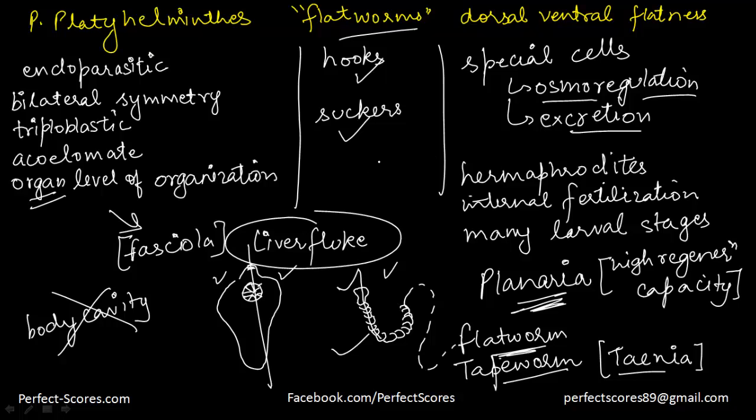So far we have covered three different phylums in this particular video: Coelenterata, Ctenophora, and Platyhelminthes. That is all for this video. In the next video, we are going to start with the next phylum, which is going to be Aschelminthes, and then we will go on to phylum Annelida. Thank you so much for watching this video and keep watching more only at Perfect Scores. Thank you so much.